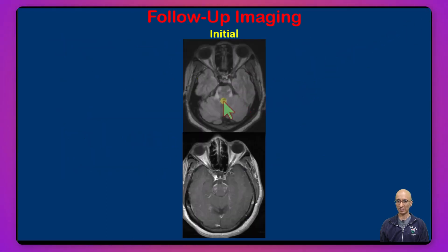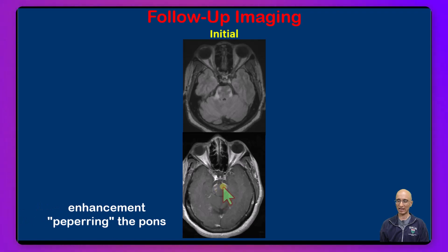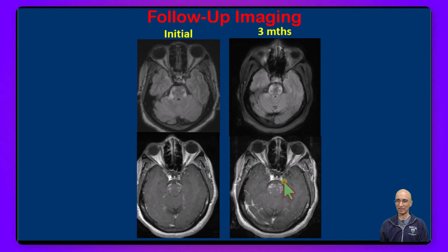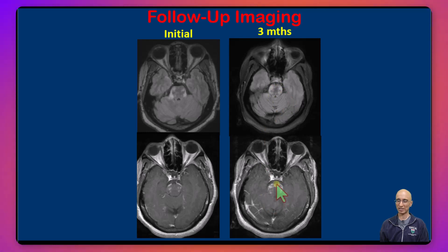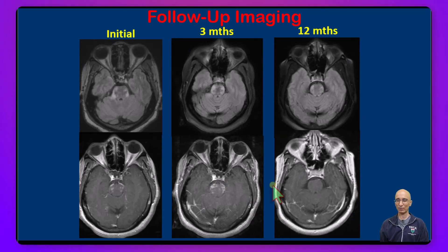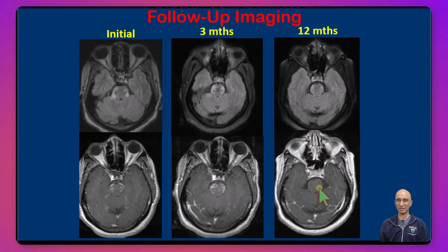So this was the initial imaging where we saw FLAIR hyperintensity in the pons including the cerebellar peduncles, with curvilinear — or classically described as peppered — enhancement in the pons. Following taper of steroids there was worsening of symptoms and you can see worsening FLAIR hyperintensity with increased enhancement in the pons. After administration of once-weekly methotrexate and gradual tapering of prednisolone, the FLAIR hyperintensity decreased with complete resolution of enhancement in the pons.